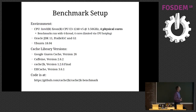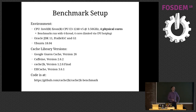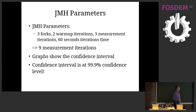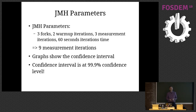That's the benchmark setup and environment. It's a machine with four physical cores. I limit core usage and disable hyper-threading via CPU hotplugging. The benchmark runs with four threads. I tested with Oracle JDK 11 with Parallel GC and G1. The JMH parameters give three measurement iterations and three forks — nine measurement iterations altogether — with 60-second iteration time. The graphs show the confidence interval in the error bars, and JMH uses a 99.9% confidence level, which is pretty tough.